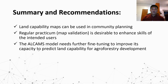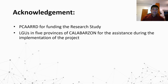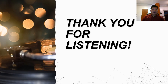For the summary and recommendations: land capability maps can be used in community planning and integrated with local management plans of the different local government units. Regular map validation is desirable to enhance the skills of intended users. The ALCAMS model needs further fine-tuning to improve its capacity to predict land capability for agroforestry development. We acknowledge PICARD for funding the research, and the LGUs in the five provinces of Calabarzon for their assistance during implementation. Thank you.